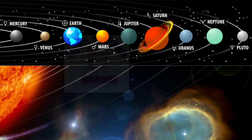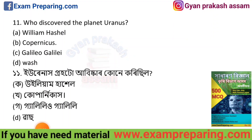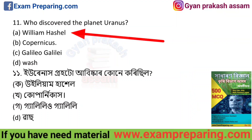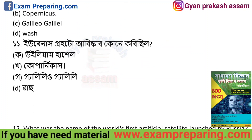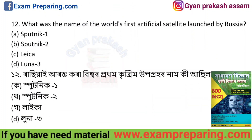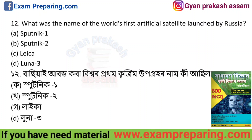Next question: who discovered the planet Uranus? The answer is William Herschel.